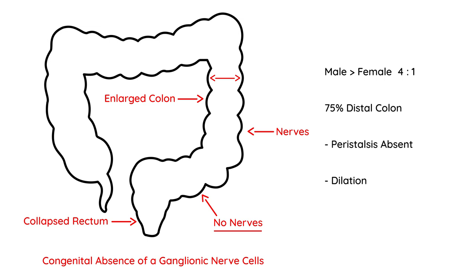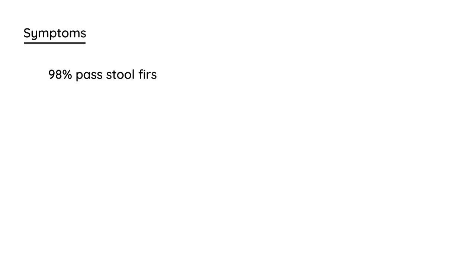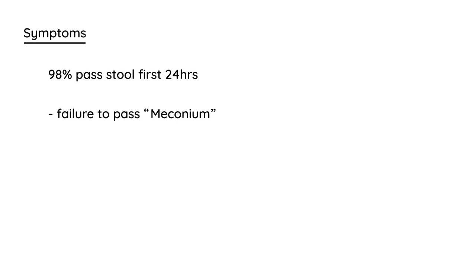This can result in the baby becoming very sick. The initial presentation: normally about 98% of babies pass stool within the first 24 hours of birth. With Hirschsprung Disease, that does not happen — there is a failure to pass meconium. Meconium refers to the very first stool that a newborn passes.